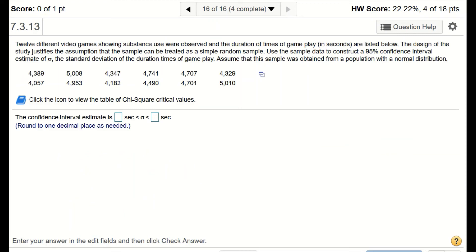Now let's look at this problem. All right, 12 different video games showing substance use were observed and the duration of times of video play in seconds are listed below. The design of the study justifies the assumption that the sample can be treated as simple random sample, so satisfy the first requirement. Use the sample data to construct a 95% confidence interval estimate of sigma, the standard deviation of the duration times of gameplay. Assume that this sample were obtained from a population with a normal distribution. So second requirement satisfied also.